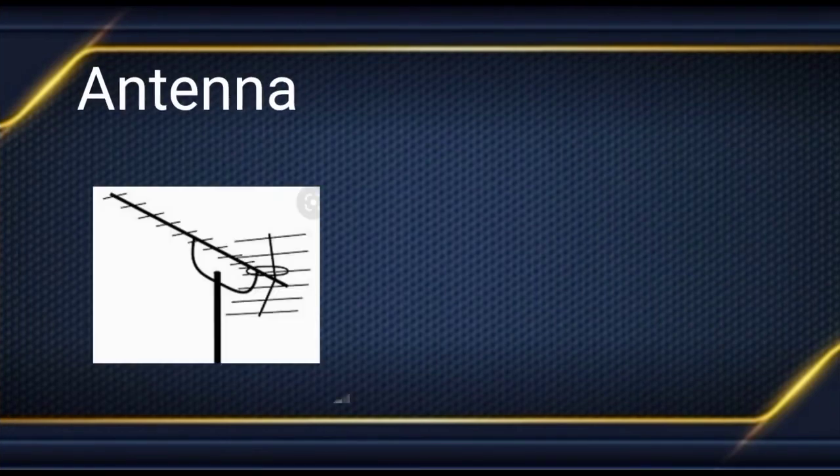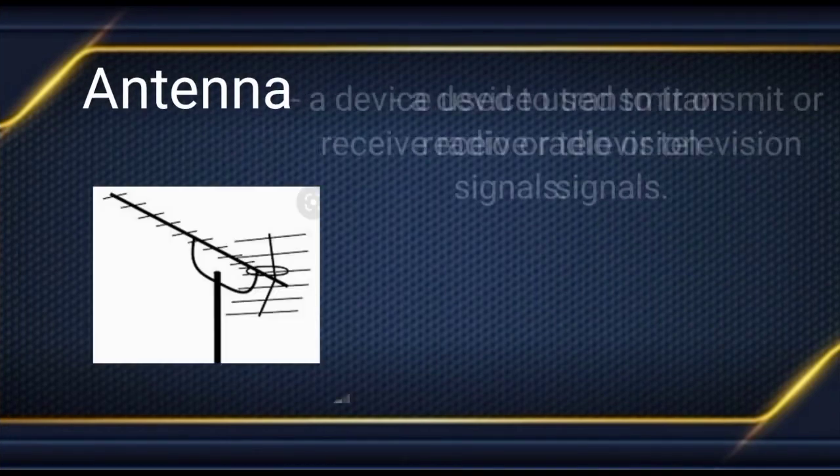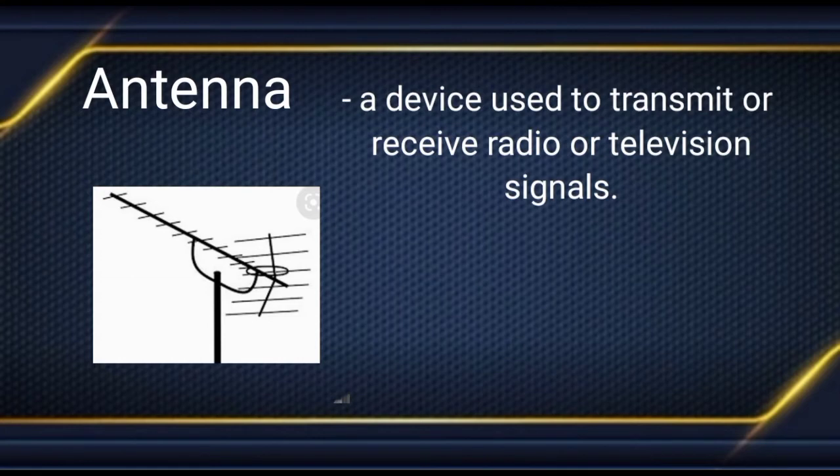Then we have the antenna — a device used to transmit or receive radio or television signals. Every radio or television has an antenna, which is why we receive signals from different television channels and radio stations. And this is the symbol.